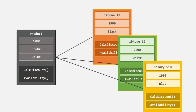When we create instances of a class, whatever properties and methods we define in that class, the instance will also have those properties and methods. For example, here we are creating a class called Product. It has three properties — name, price, and color — and two methods: calc discount and availability. When we create an instance of this Product class, that instance will also have name, price, and color, and it will also have calc discount and availability methods. Every time we create an instance of a class, that instance will have all the properties and methods from that class.